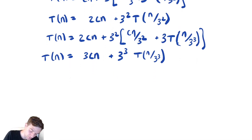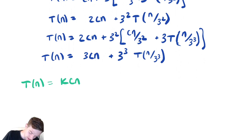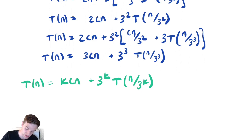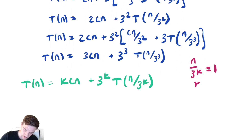Now let's identify the pattern. We notice that t of n is equal to k times cn plus three to the k times t of n over three to the k. We need to identify what value of k would cause us to reach the base case. So we set n over three to the k equal to one, which means k equals log base three of n.